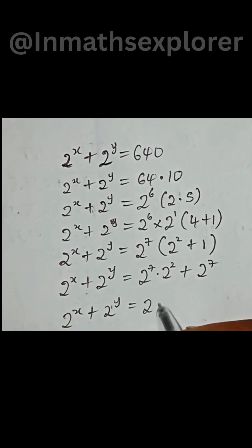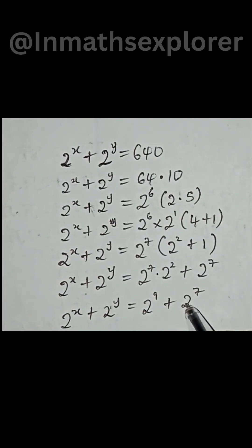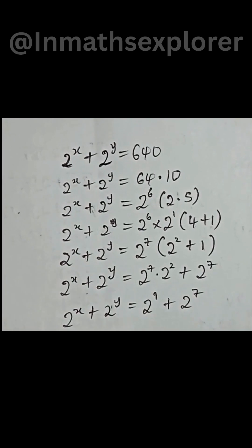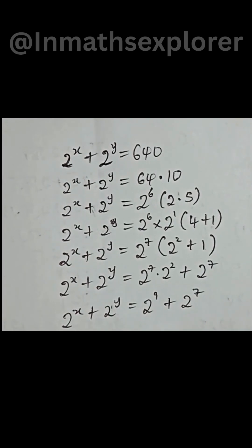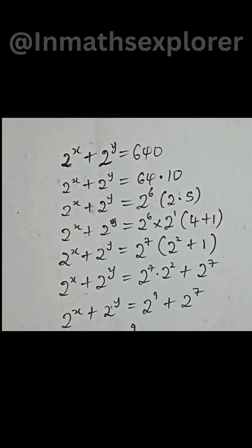So we now have 2 to the power of 9, plus 2 to the power of 8, plus 2 to the power of 7. Now we can conclude that 2 to the power of x equals 2 to the power of 9.